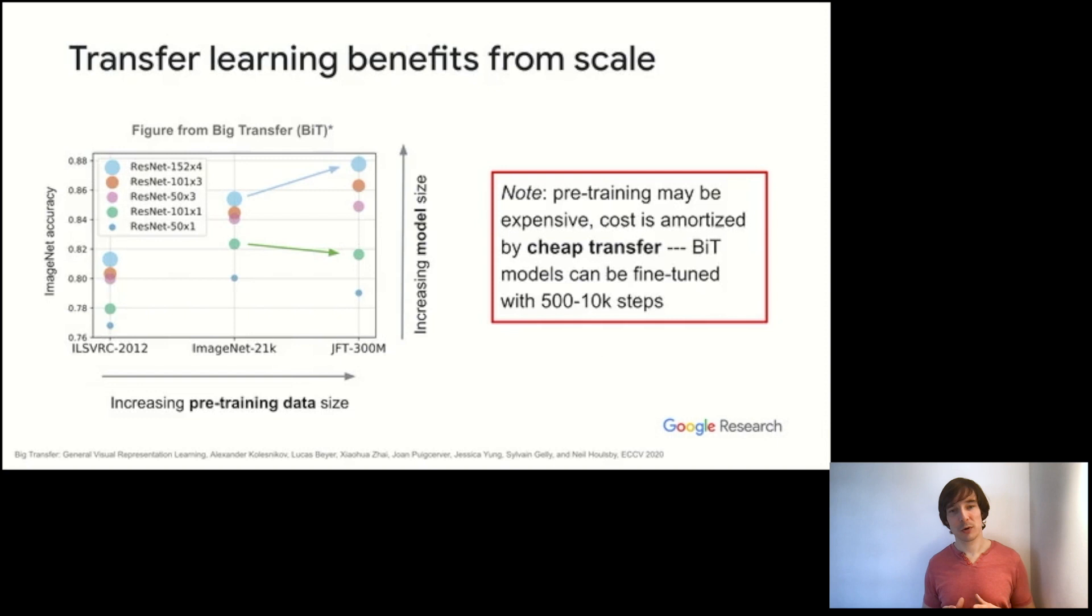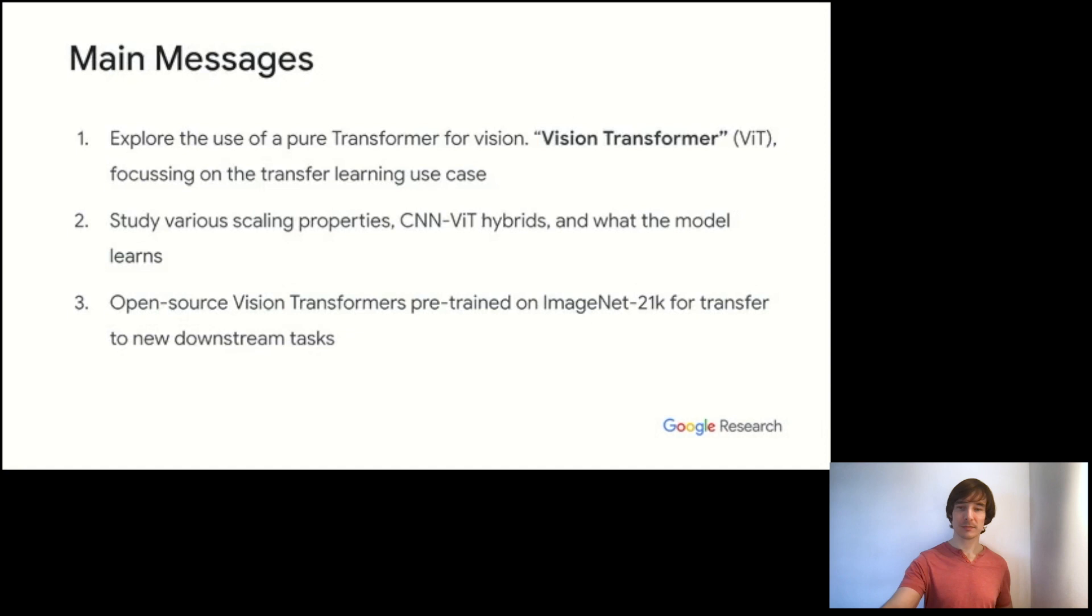I should note at this point that when we talk about large-scale training, we're talking about pre-training, which may be expensive, but it's performed only once. And the process of transfer itself may be very cheap, and indeed is typically much cheaper than training from scratch. For example, GPT-3, given the prompts, just requires forward passes, and transferring the bit models only requires a few fine-tuning steps, many less than is required for training from scratch. And so this motivates trying transformers, which scale very well for this application in vision.